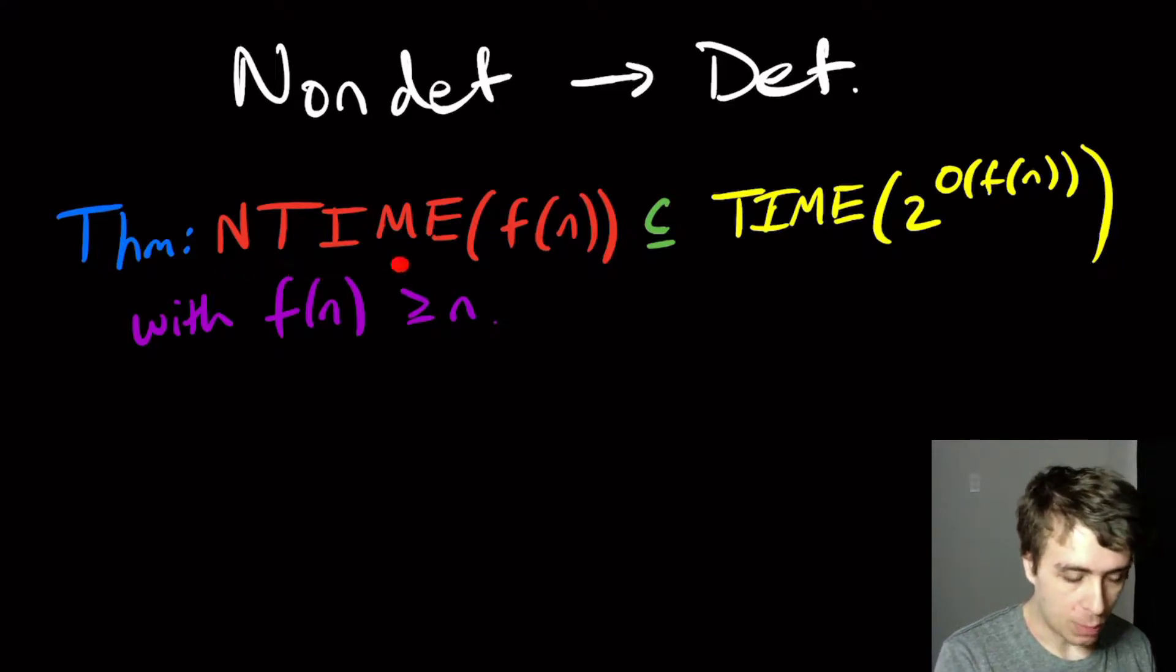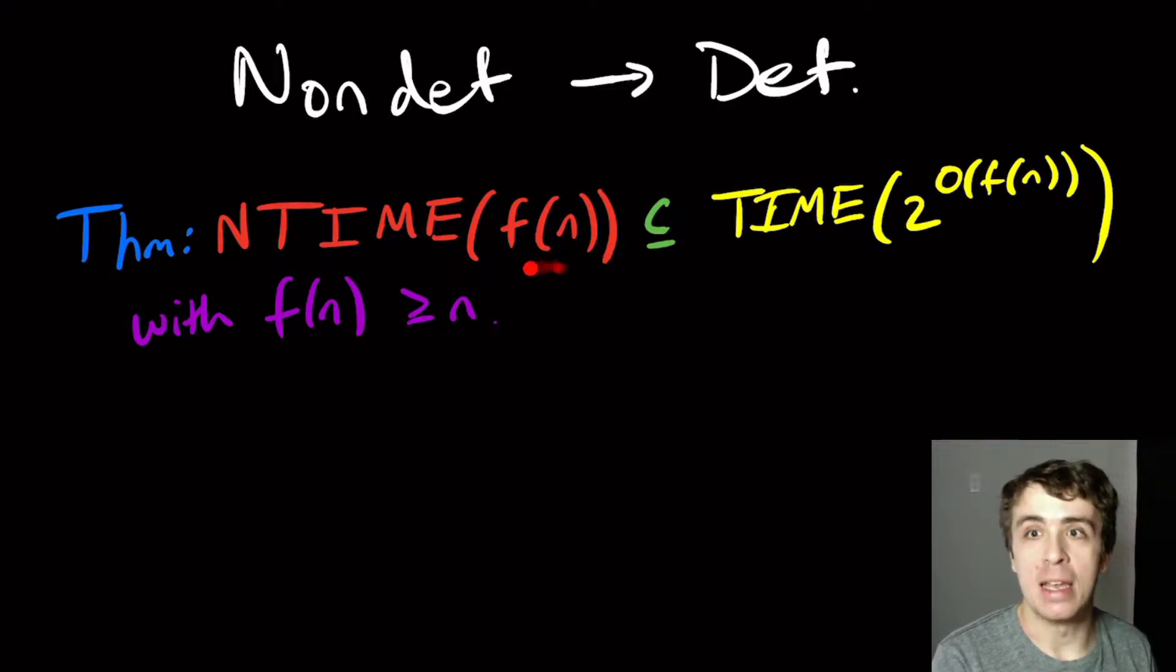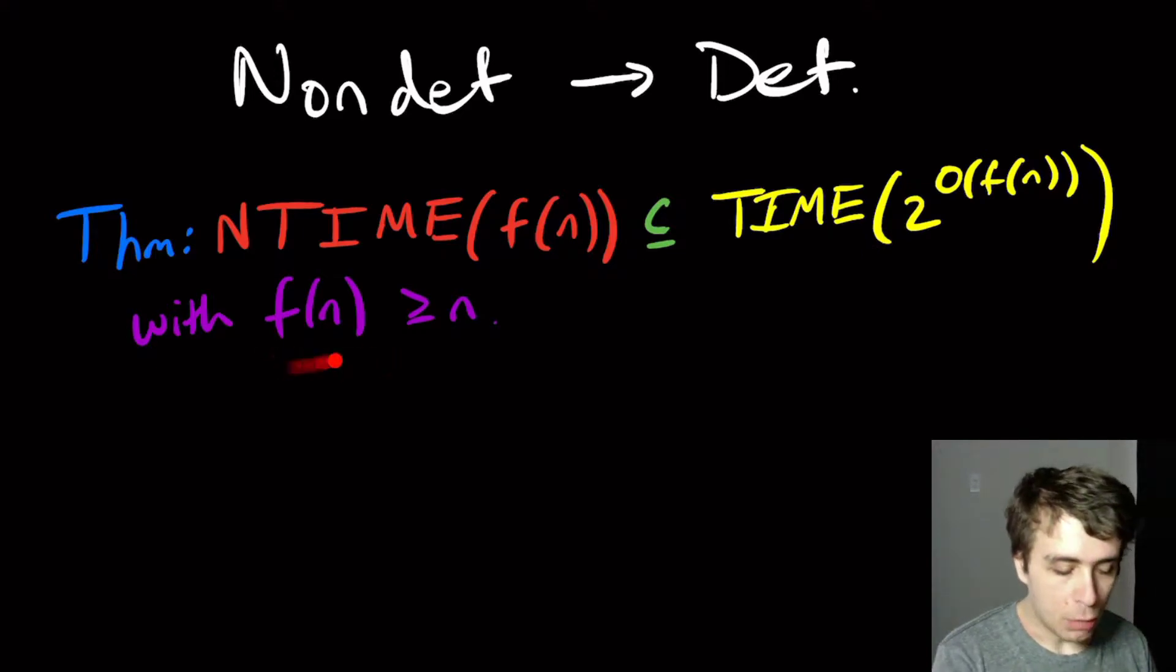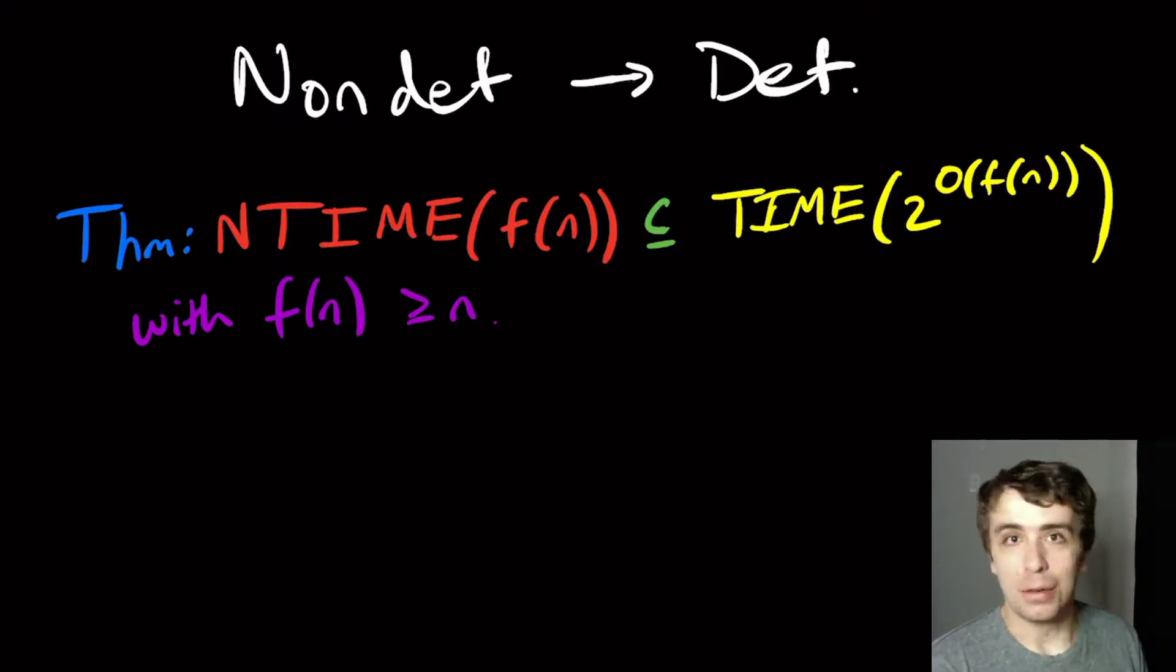So the theorem that we're going to prove here is that non-deterministic time, if you run in f(n) time or a constant times that, then you're going to run in at most deterministically 2 to the power constant times f(n) here. And there could be a different constant here, but again, we're going to ignore constants. Here we're going to require that f(n) be bigger than n purely because if you don't read the whole input, then you don't really say a whole lot. So you want to at least read the whole input, which means you have to take at least n time.